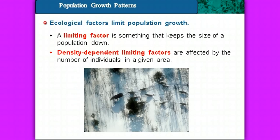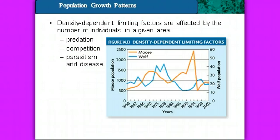There are ecological factors that limit population growth, called limiting factors. They keep the size of a population down so it can't grow exponentially or grow forever. There are density-dependent limiting factors, determined by the number of individuals in a given area. These include predation, competition, parasitism, and disease.